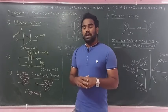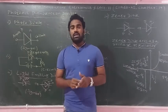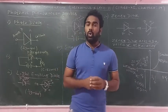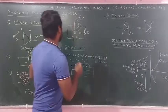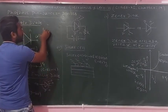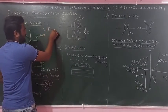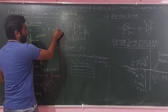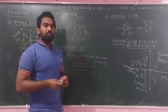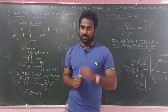A photodiode is an electronic device which converts light energy into electrical energy. This device can convert light energy into electrical energy. This is the definition of a photodiode.